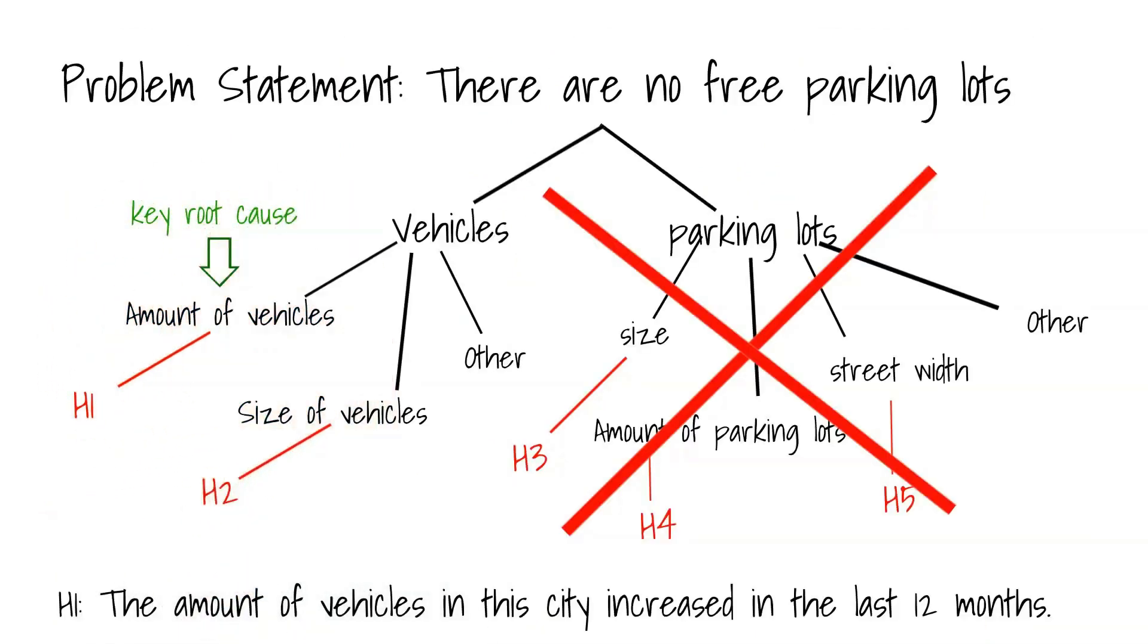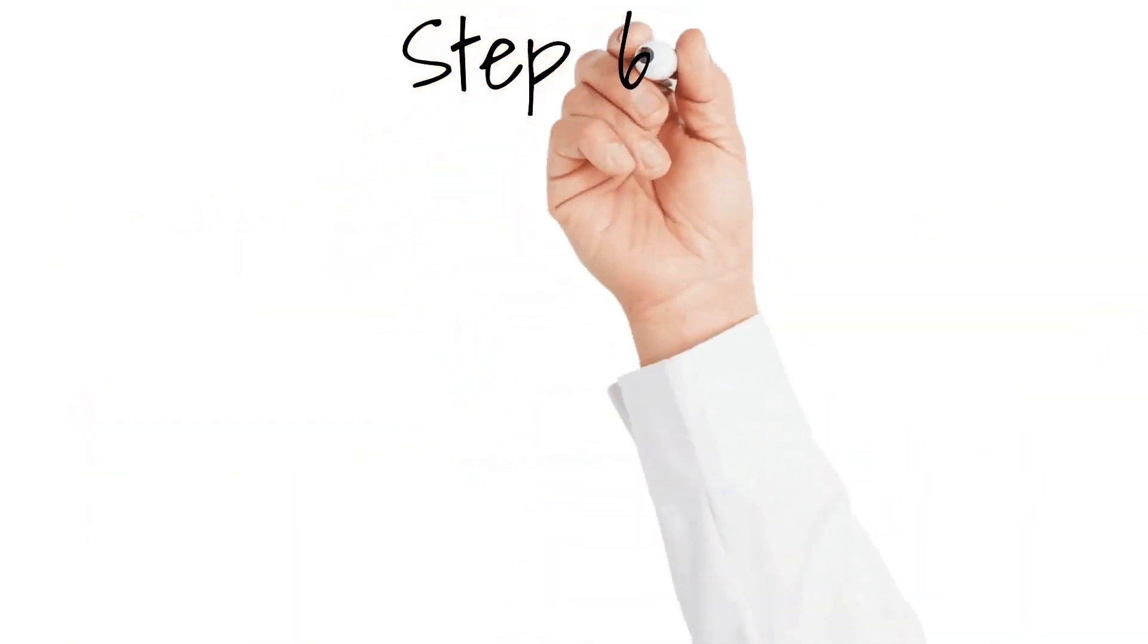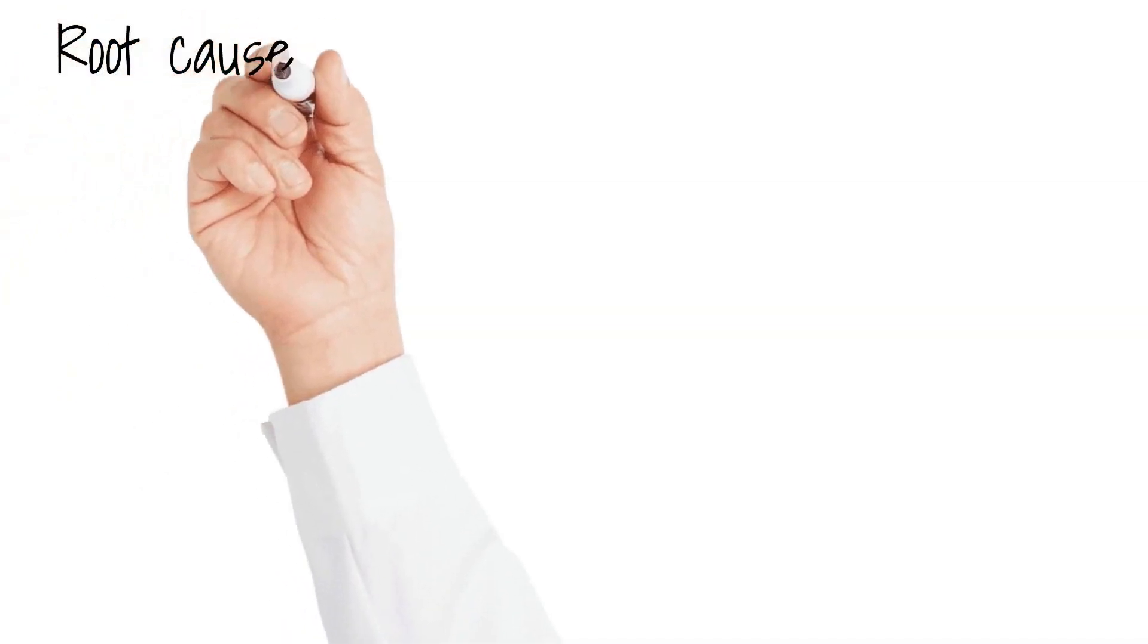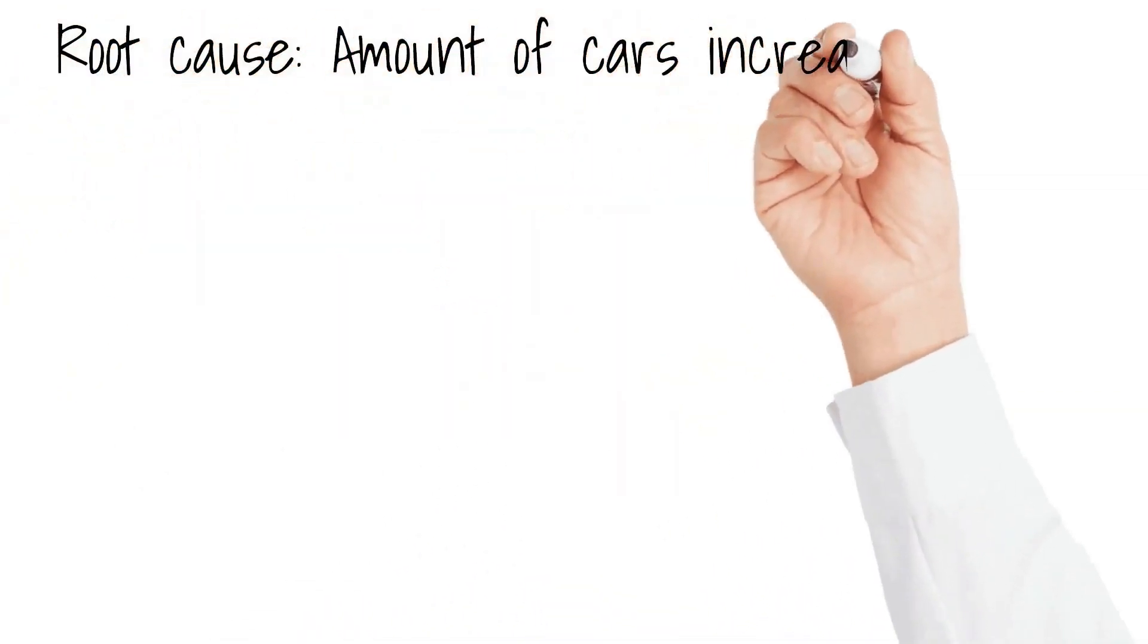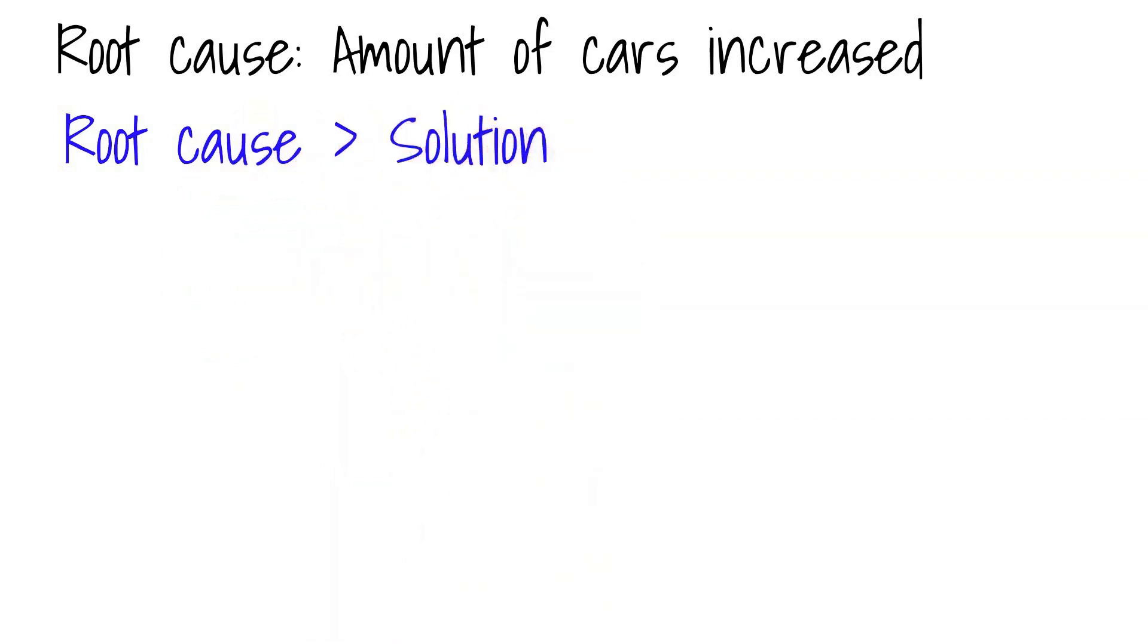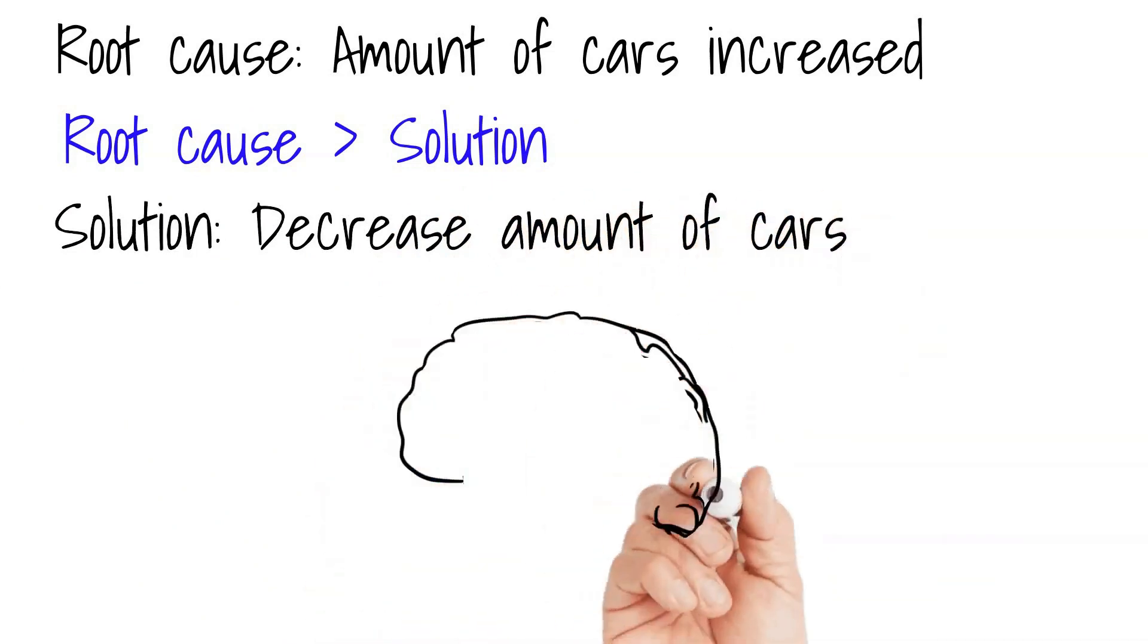Step six: identify action items and an action plan on what needs to be done in order to tweak around the root cause so the overall problem gets resolved. We assume that the amount of vehicles increased dramatically and therefore we have an issue with free parking lots in the city. Now it's time to propose a solution. The hardest part is always actually finding the root cause, not the solution.